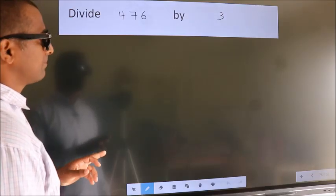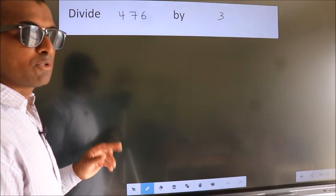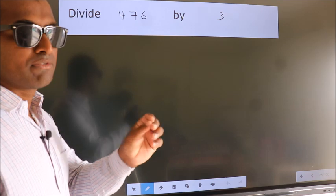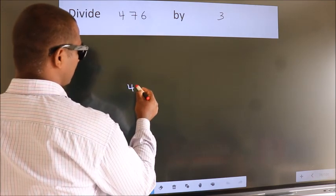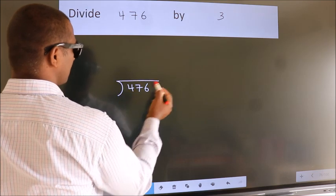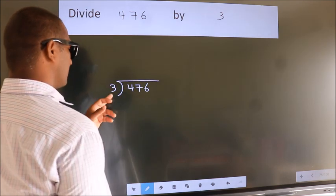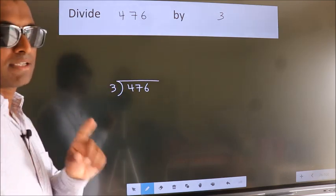Divide 476 by 3. To do this division we should frame it in this way. 476 here, 3 here. This is your step 1.